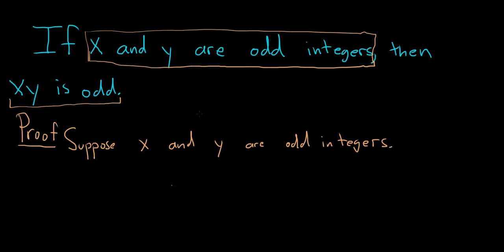But if you're not sure, it's always just better to copy it verbatim. Then x times y is odd. That's what we have to show. So we somehow have to look at x times y.